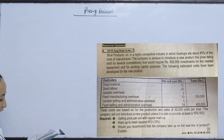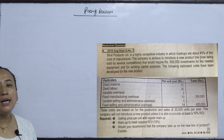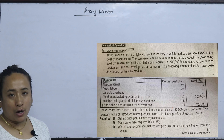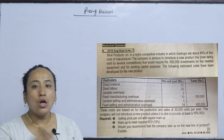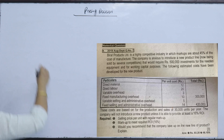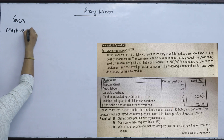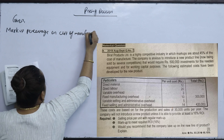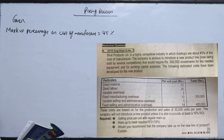Birat Product Limited is in a highly competitive industry in which markups are about 45% of the cost of manufacturing. The markup percentage is based on the cost of manufacturing. The company also has non-manufacturing costs which are not covered in the manufacturing cost. The markup percentage on cost of manufacturing is 45%.